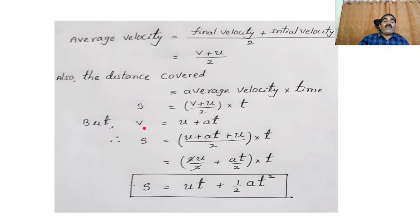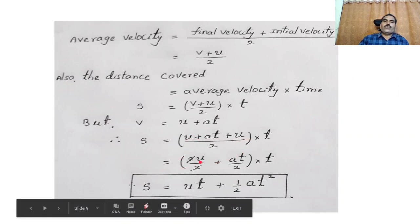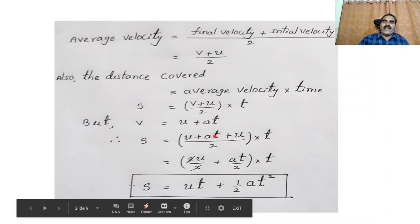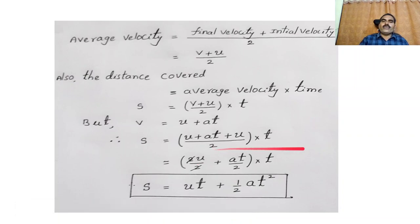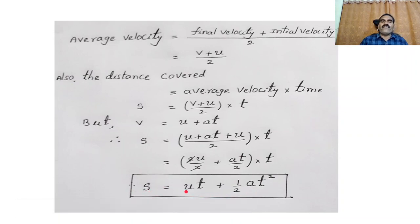From the first equation of motion, V equals U plus AT. Substituting this V value: S equals U plus AT plus U by 2 into T, which equals 2U by 2 plus AT by 2 into T. The 2 cancels, giving UT plus half AT into T squared. So S equals UT plus half AT square.